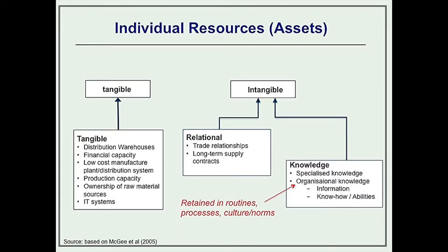Resources can be divided into different sorts. Resources can be tangible, and these are things you would often see on a firm's balance sheet — things like its warehousing, plant and machinery, production capacity, ownership of sources of raw materials, IT systems. These are tangible resources or assets.